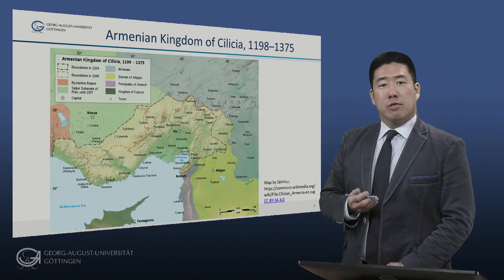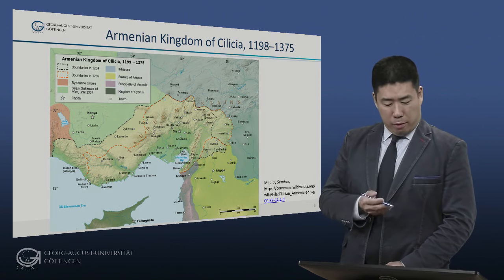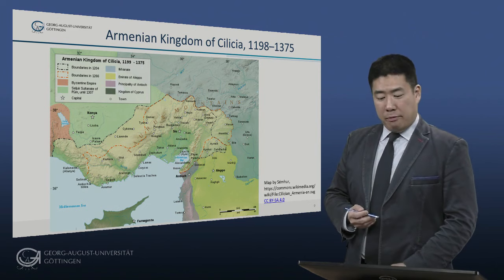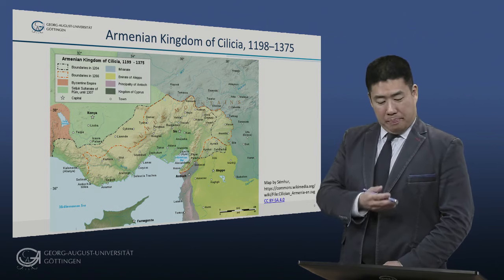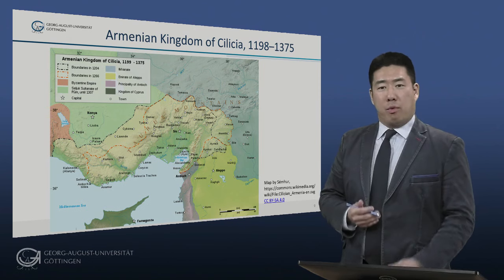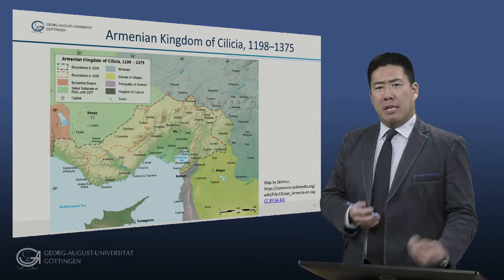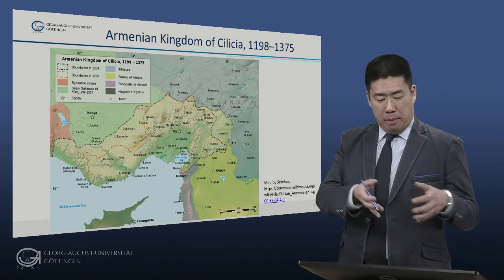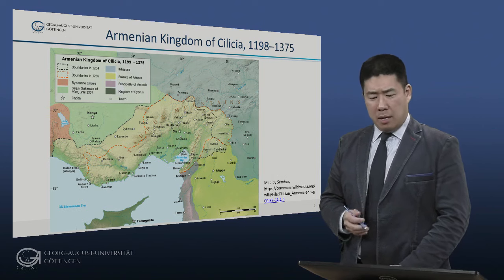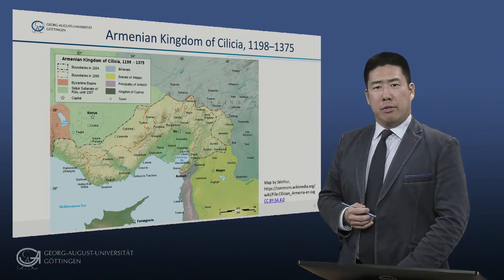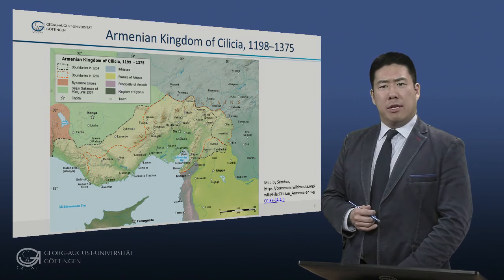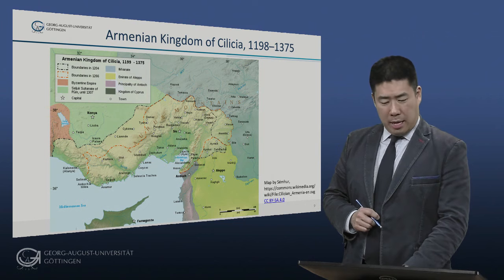This map shows the Armenian Kingdom of Cilicia on the Mediterranean coast. For almost 200 years, this kingdom was home to a thriving literary scene, and as a result, most of our Middle Armenian sources come not from today's Armenia, but from this kingdom of Cilicia. After it was conquered in 1375, there was no significant Armenian state until the establishment of the first independent Republic of Armenia in 1918.